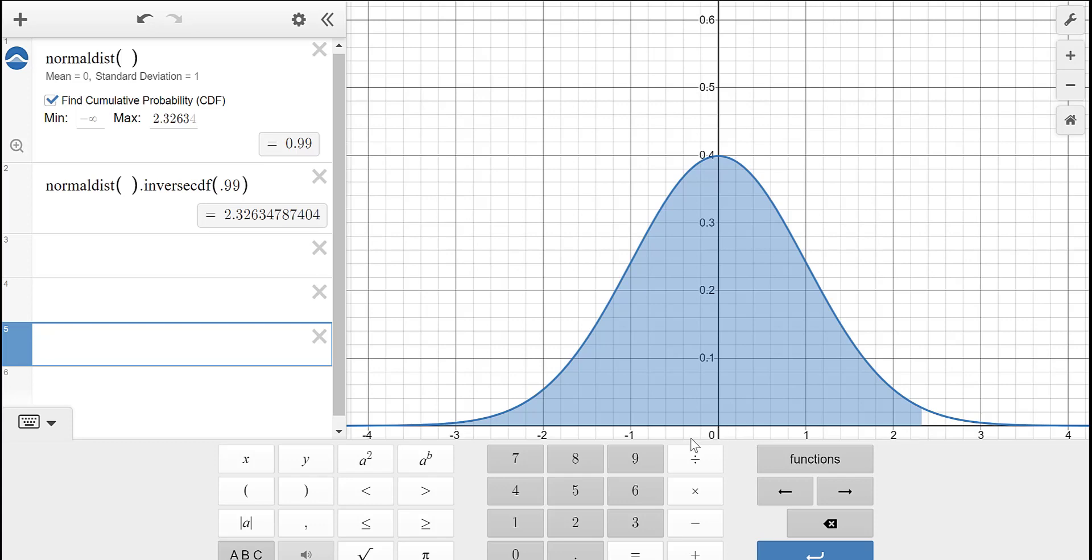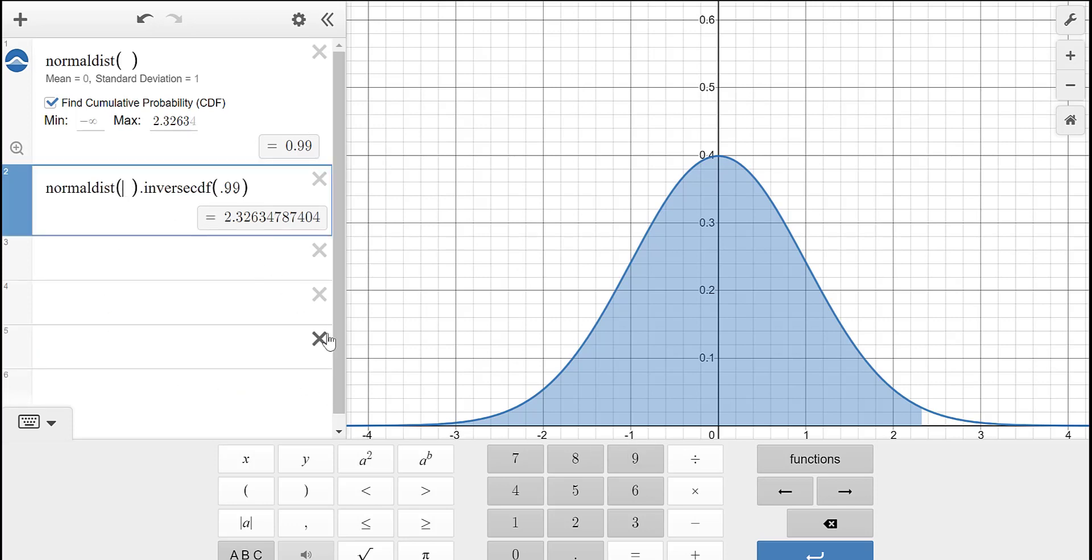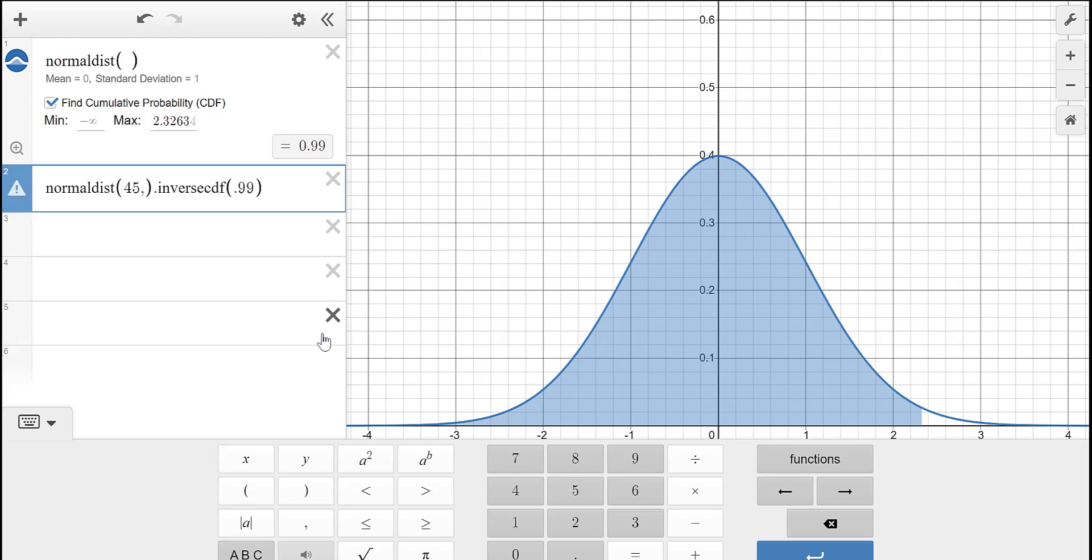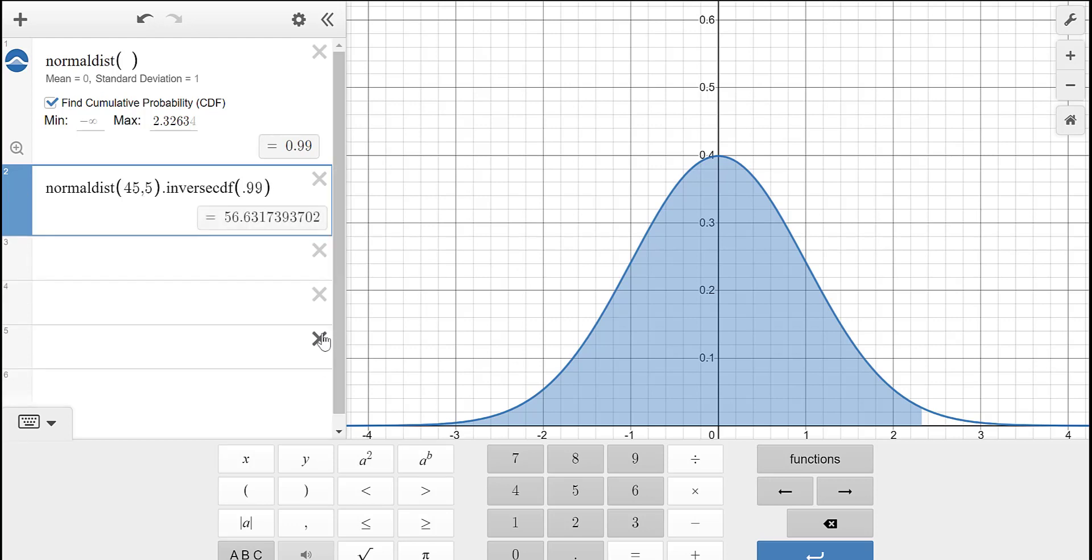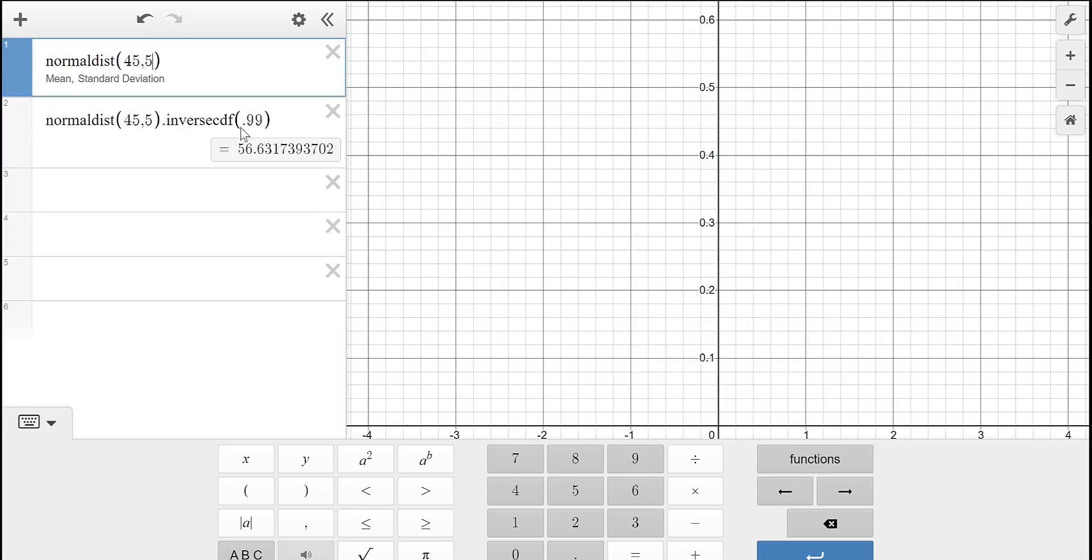This was for the standard normal distribution. So we have a mean of 0, a standard deviation of 1. If you want it for something else, say we had a normal distribution with a mean of 45, and then maybe the standard deviation of 5, then we're just going to put that into the parentheses on the normal distribution. And to show you how that works, I will also put it on here so you can check it. So 45 and 5.